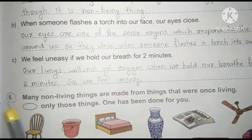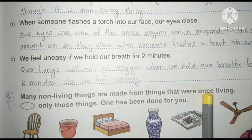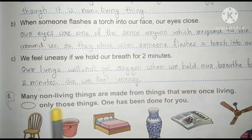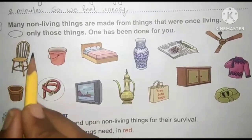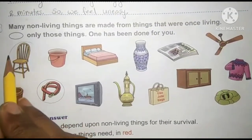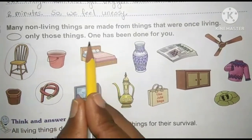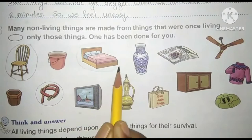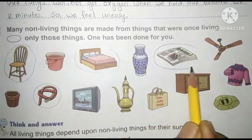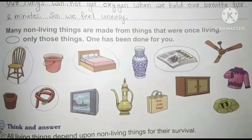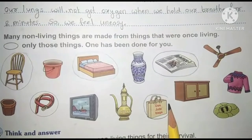Sixth, many non-living things are made from things that were once living. Circle only those things; one has been done for you. Chair, cot and cupboard — these are all made from wood. We get wood from trees, and a tree is a living thing. Paper is made from bamboo tree.